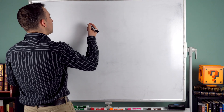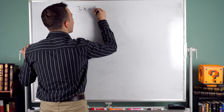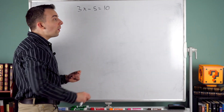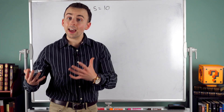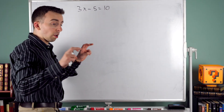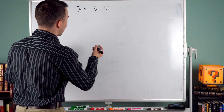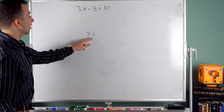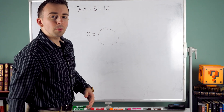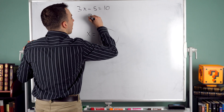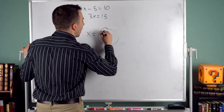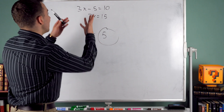We've talked about solving simple linear equations, like 3x minus 5 equals 10. To solve an equation like this means to find the value of x that's going to make it true — to get x by itself. You know the routine: add 5 to both sides, so 3x equals 15, then divide both sides by 3. That gives x equals 5. That's the solution to the linear equation.